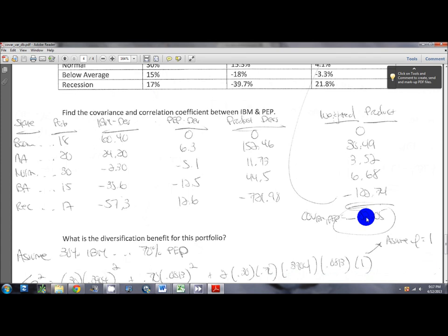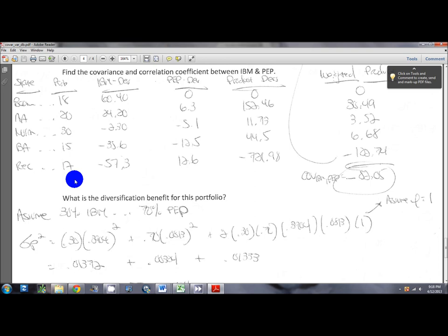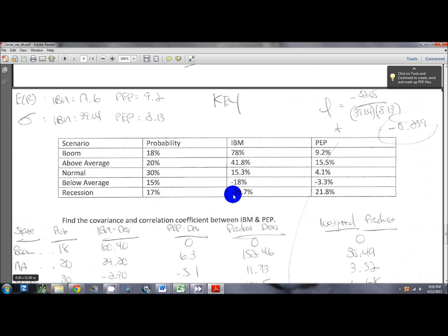The actual magnitude of the number tells us nothing about the actual degree of covariance between the two. The only thing that you can gather at this point is they have a negative relationship. So they're going to move against each other, which you could kind of deduce that from simply looking at the chart. Before we do diversification benefit, now we scroll up. I ran out of room.